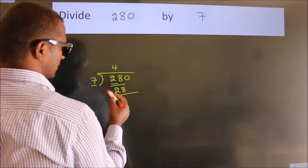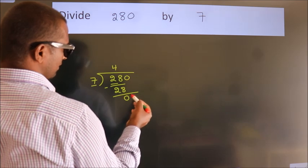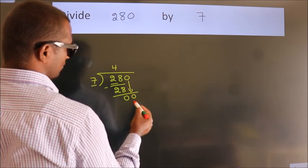Now we should subtract. We get 0. After this, bring down the beside number. So 0 down. So 0.